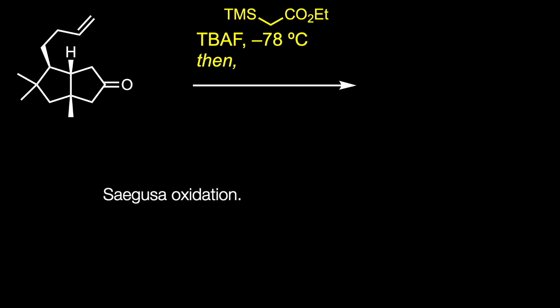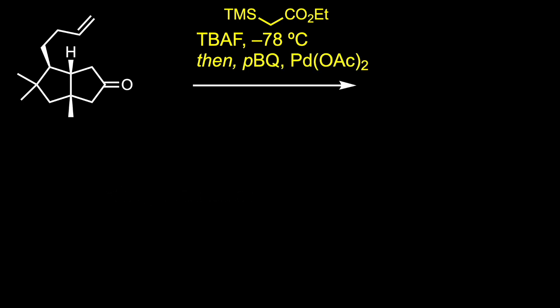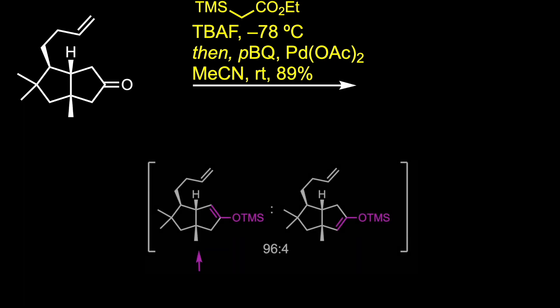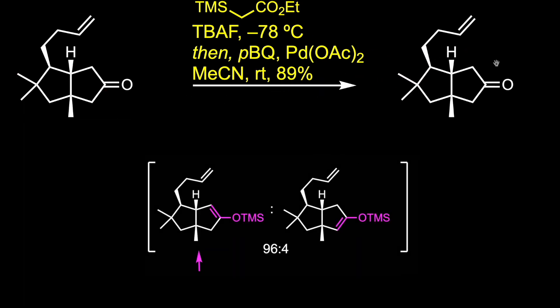The regioselective formation of the silyl enol ether was obtained using ethyltrimethylsilyl acetate and TBAF in THF. Further exposure of this intermediate with palladium(II) acetate and para-benzoquinone in acetonitrile delivered the desired enone. This is the Saegusa oxidation, a name reaction that allows the regioselective introduction of alpha-beta carbon-carbon double bonds to cyclic and acyclic ketones via palladium-mediated oxidation of the corresponding silyl enol ethers.